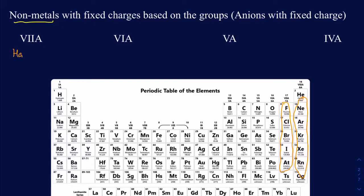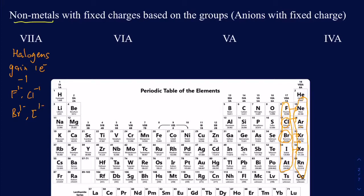Halogens have seven valence electrons, but here you want to look at how far away you are from your noble gas. Since you're only one electron away from the noble gas, they like to gain one electron to behave like noble gases. For example, chlorine is one electron away from argon, bromine is one electron away from krypton. So they all gain one electron and get a 1− charge. Fluorine, chlorine, bromine, and iodine all have a 1− charge.